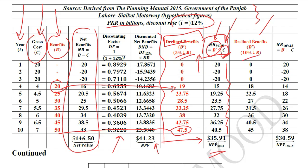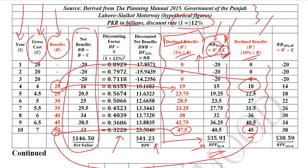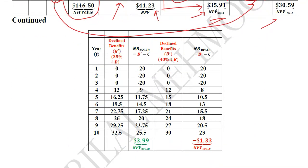Then we have the decline in benefits at 10%. Why? Because the NPV is still positive and we want it to turn 0 — to find that dead-end point beyond which we should not go, as after that the NPV will turn negative. With a 10% decline, you can see that 20 becomes 18 and 50 becomes 45. Using the new net benefits and old costs, the NPV is now 30.59 at a 10% decline in benefits. We are still not at the point we want, because this is 30.59 and we want it to be 0.